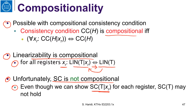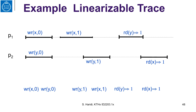I will show you an example where even though a trace is sequentially consistent with respect to a single register, the trace for all registers may not be sequentially consistent. Let us look at some examples to understand the difference between sequential consistency and linearizability. We have two processes, and this is a trace shown pictorially.